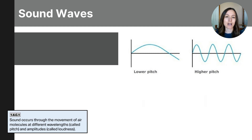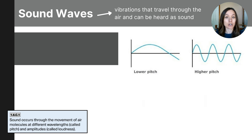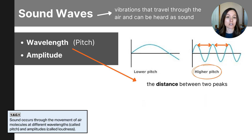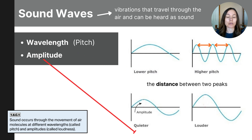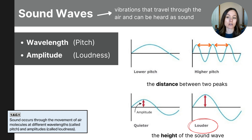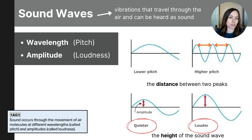Sound waves are vibrations in the air that travel in waves and are captured by our ears, which enables us to hear. These waves are characterized by their wavelength and amplitude. Wavelength refers to the distance between the two peaks of a sound wave, and this determines the pitch of the sound. A shorter wavelength means a higher pitch, like a whistle, while a longer wavelength means a lower pitch, like a drum. Amplitude refers to the height of the sound wave and determines the loudness of the sound. A taller wave means a louder sound, like a shout, and a shorter wave means a quieter sound, like a whisper. Together, the wavelength and amplitude of sound waves allow us to perceive different tones and volumes, helping us understand and interact with the world around us.